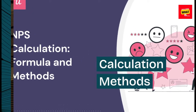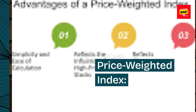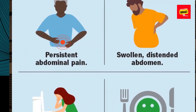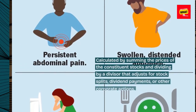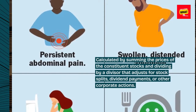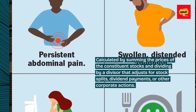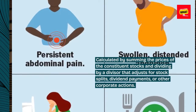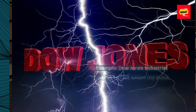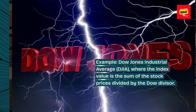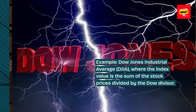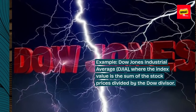Calculation Methods. Price-Weighted Index: Calculated by summing the prices of the constituent stocks and dividing by a divisor that adjusts for stock splits, dividend payments, or other corporate actions. Example: Dow Jones Industrial Average, where the index value is the sum of the stock prices divided by the Dow divisor.